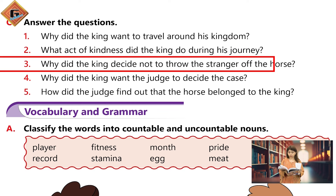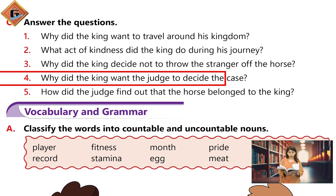Question three: why did the king decide not to throw the stranger off the horse? The king decided not to throw the stranger off the horse because in that way the stranger would create a fuss and people would ask him to return the horse to the stranger. Question four: why did the king want the judge to decide the case? The king wanted the judge to decide the case because he wanted to find out how well the judge of Basra does his job.